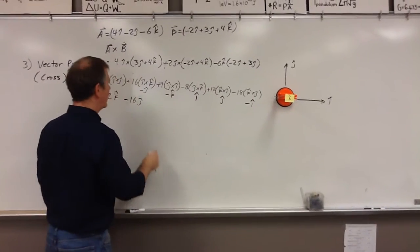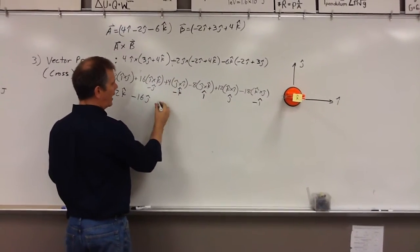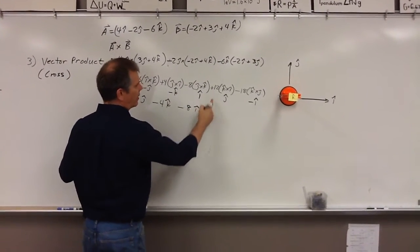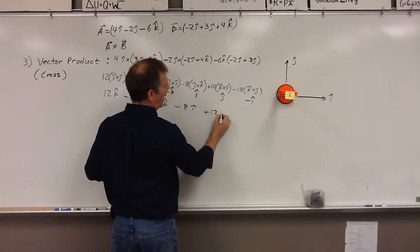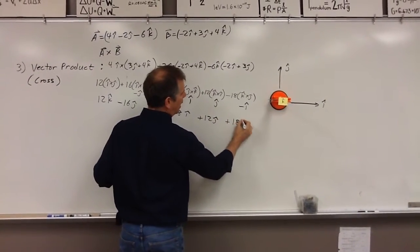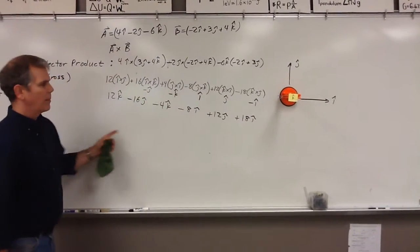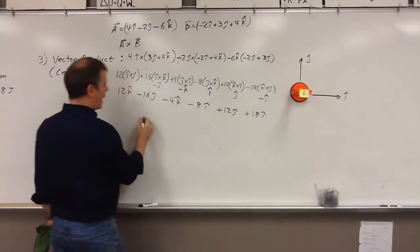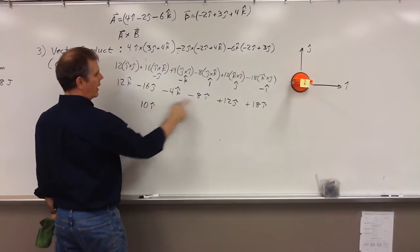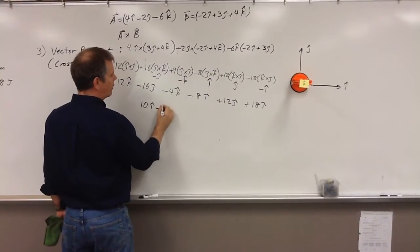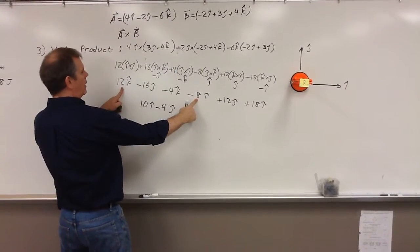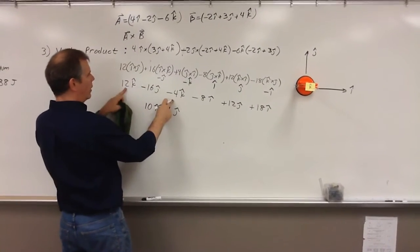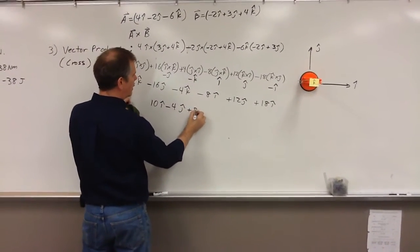So now I can very easily go: this is 4 times negative k, negative 4k-hat; negative 8i-hat; 12j-hat; plus 18i-hat. I'm going to gather like terms. There's 10i-hat; j and j gives me negative 4j-hat; and 4 and 12 — that was an i, I almost did it wrong — gives me positive 8k-hat.